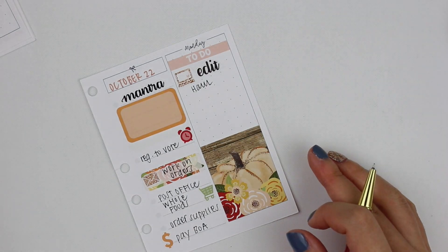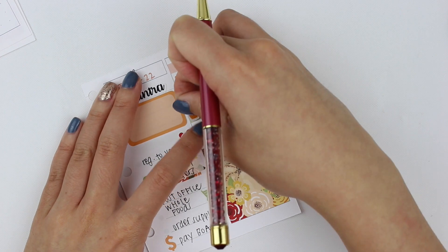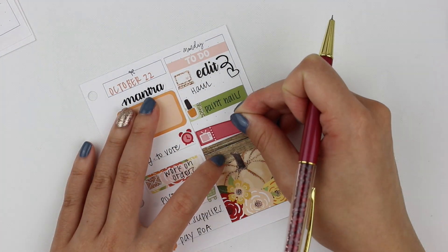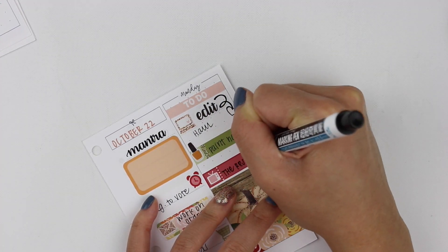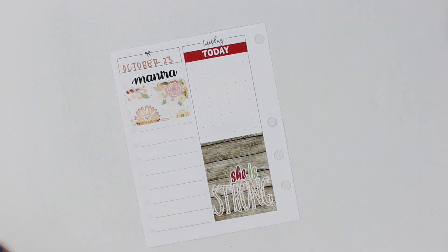Then I put down a to-do header. I also wanted to edit a haul. The glittery laptop is from Little Miss Papery, and the heart arrow and edit stickers are from my shop. I also wanted to paint my nails, and the nail polish sticker is from Chrissy and Designs.